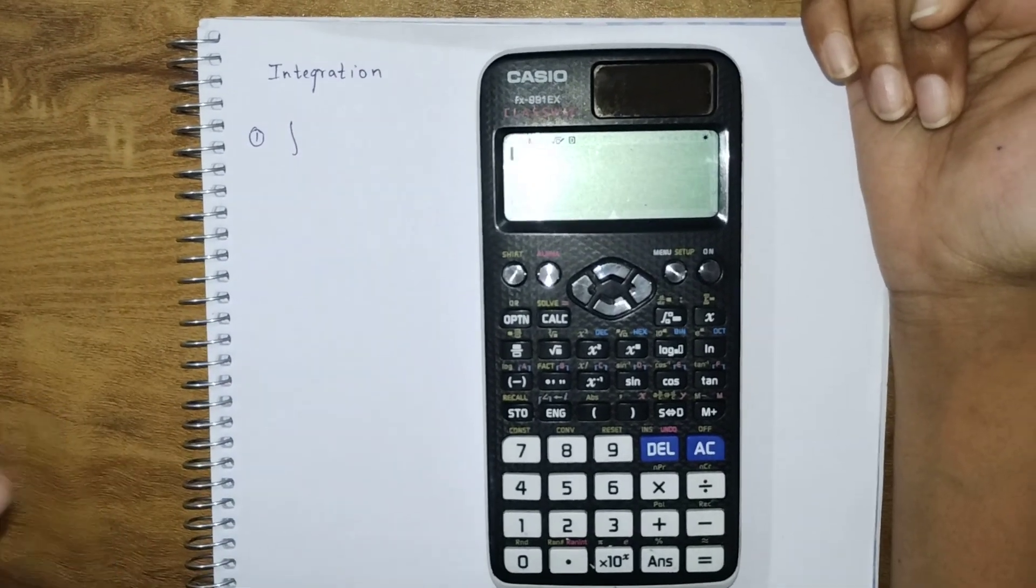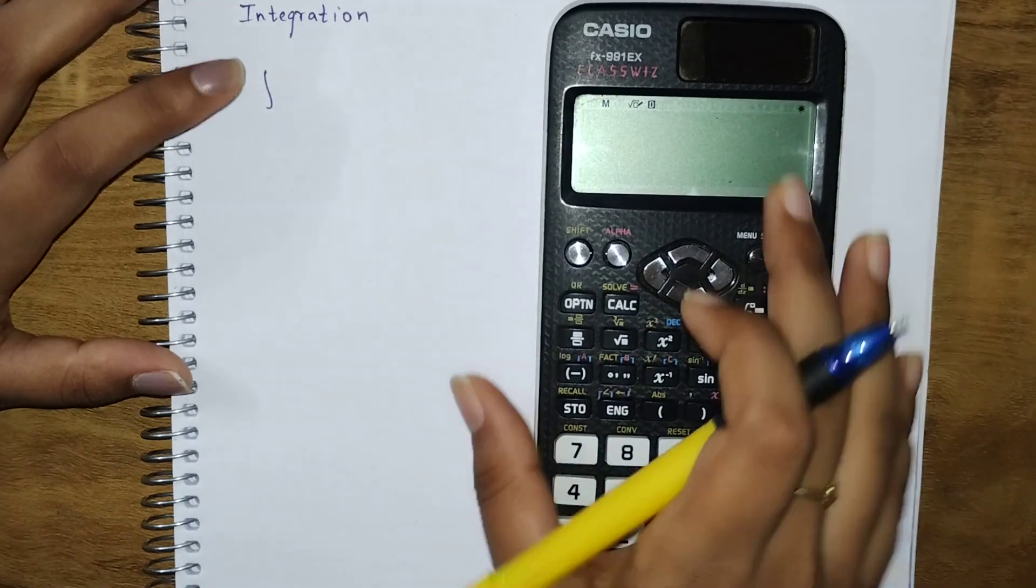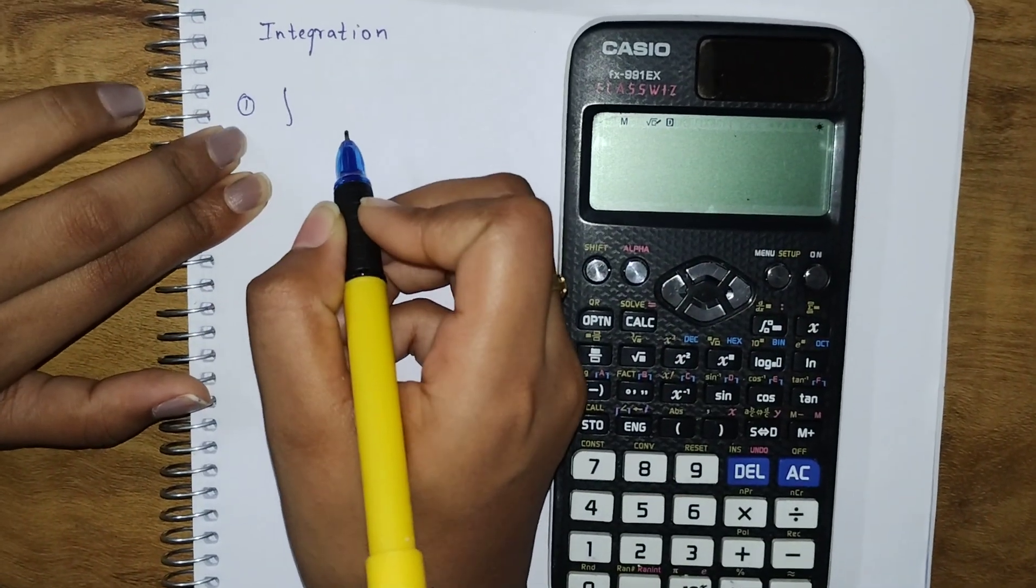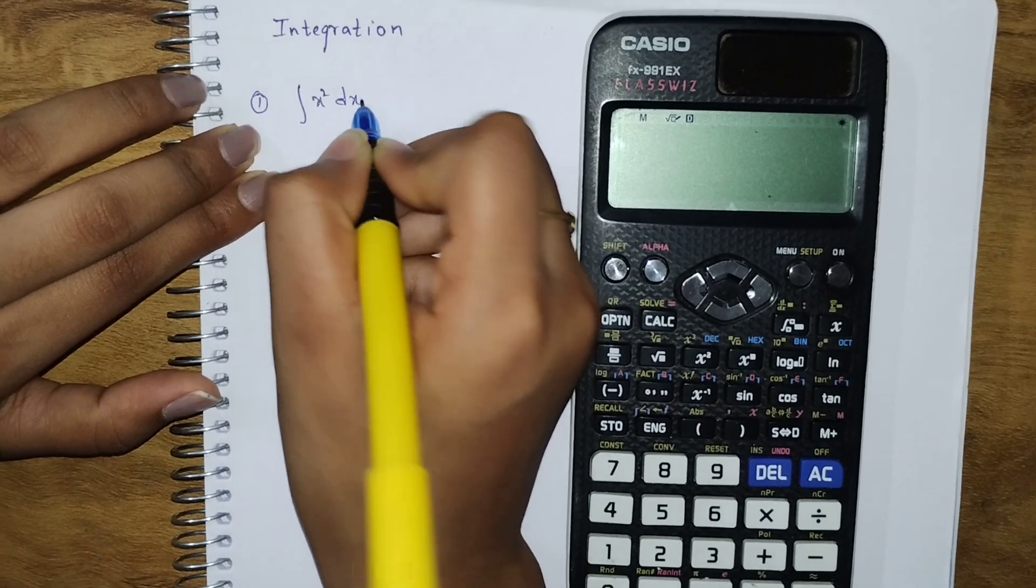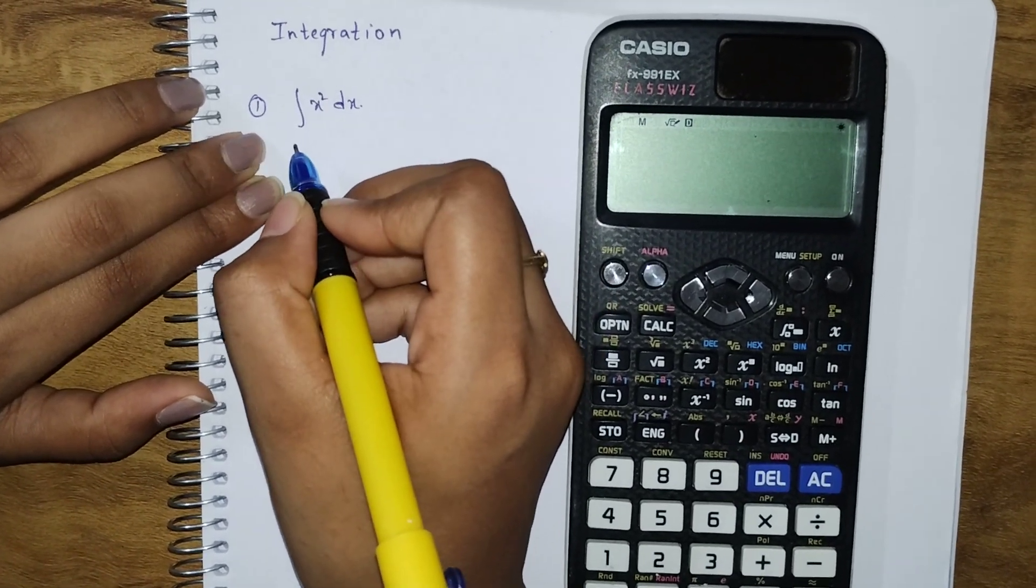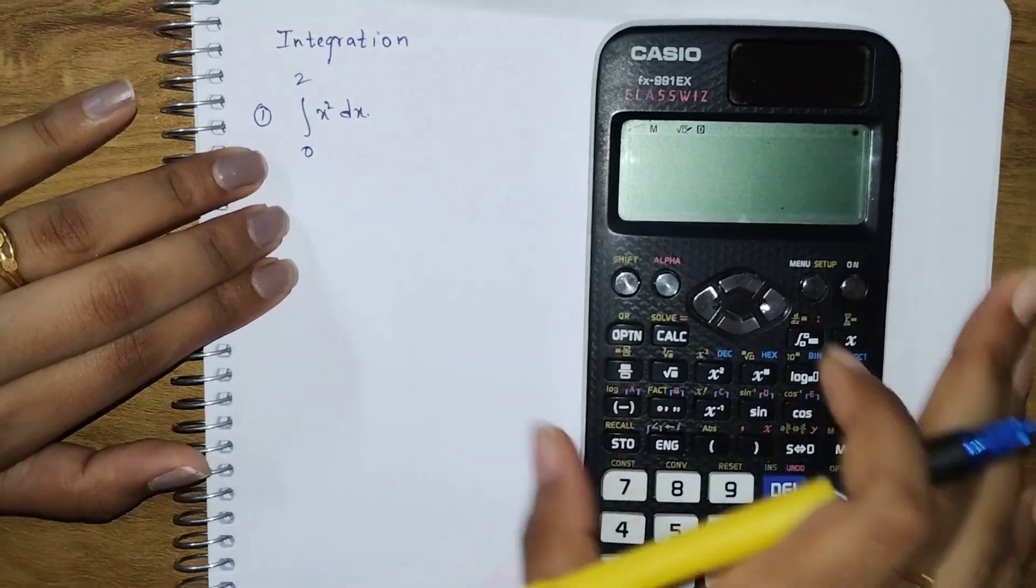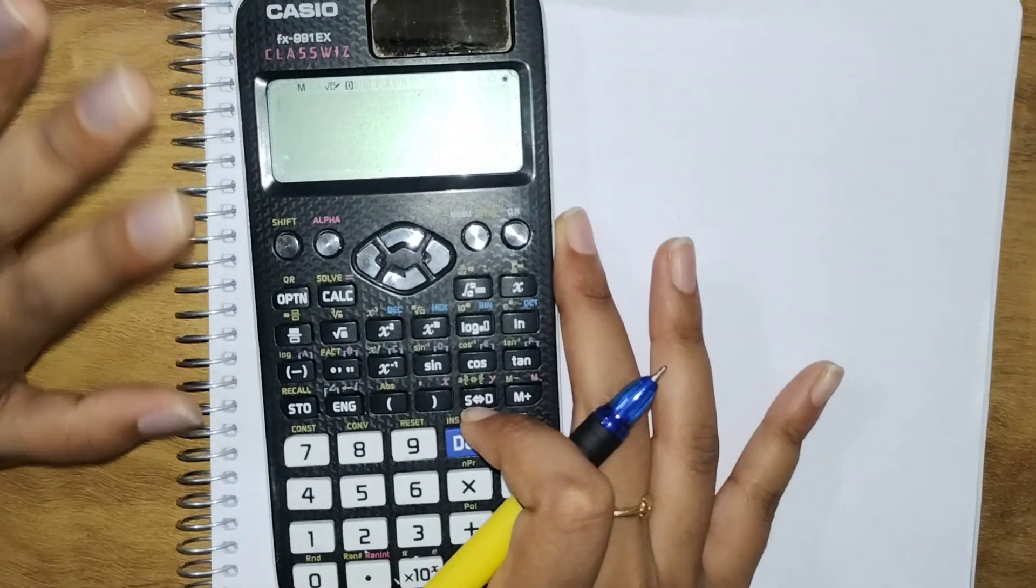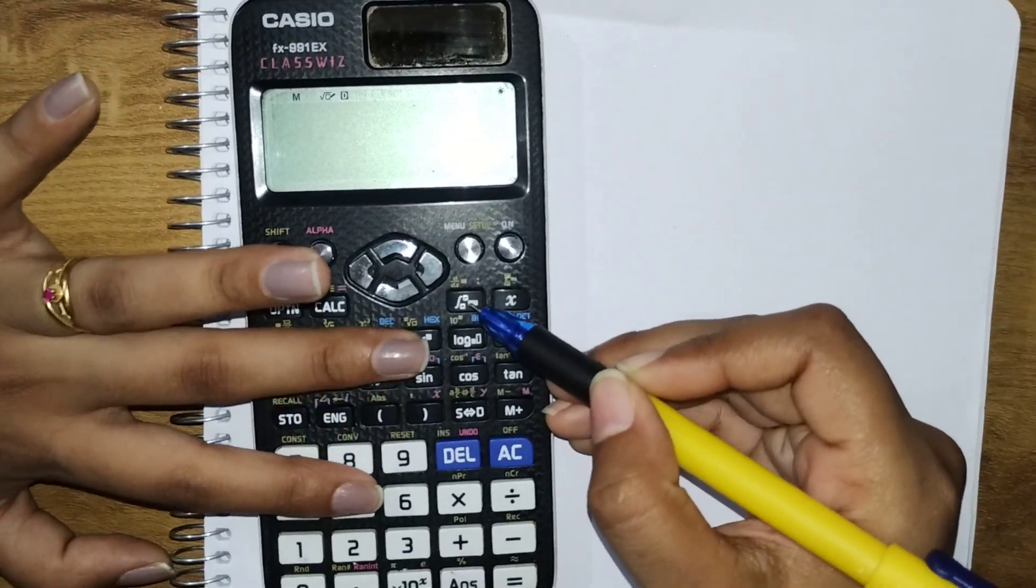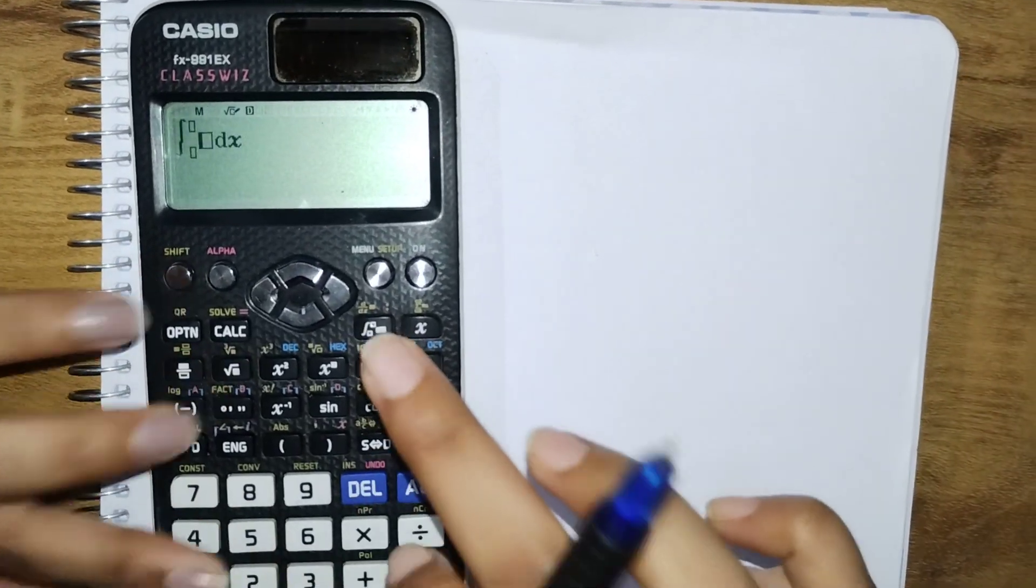First, I'm taking a basic example: x² dx from 0 to 2. We are going to solve this using our scientific calculator. It's very simple. You can see the integration option here. Click on this.